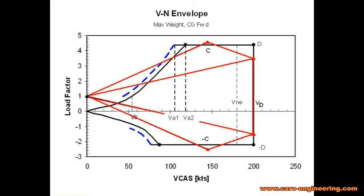We have already defined the weight and CG envelope for the airplane. Now we need to define another envelope: the speed-load factor envelope. Here are the corner points for the pilot maneuvering loads in black, defined by speed starting at the stall speed up to VD, the maximum design speed. For each speed, the airplane may be subjected up to a certain G load. Up to VA, it is the maximum that is aerodynamically possible. The typical limits are, for example, 3.8 G for normal category, 4.4 G for utility category, and 6 G for aerobatic category.